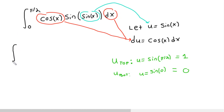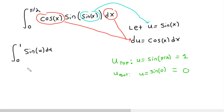So now I'm running from 0 to 1, and I get the integral of sine u du. The sine x got replaced with u, and cosine x dx got replaced with du. The integral of sine is just negative cosine u evaluated from 0 to 1.